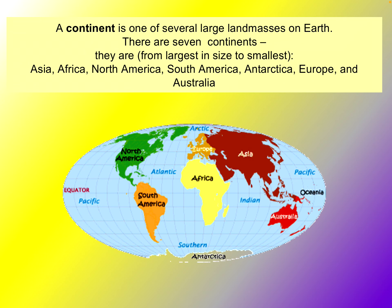Some people try to teach that Oceania is a continent, but it is not. It's what we call a super region — a very large region with characteristics in common. In this case, it's islands in the Pacific. There are many islands in the Pacific, but they are not large landmasses. The definition of a continent is one of earth's large landmasses. Australia is the continent in this region; Oceania is a super region.